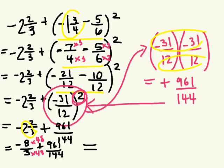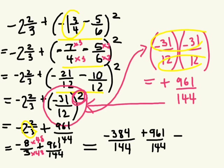And we want to find a common denominator and then simplify. If we multiply this by 48, the common denominator will be 144. So we have, what's negative 8 times 48? Negative 384 over 144 plus 961 over 144. And what's the answer? 577 over 144. And can we turn this into a mixed number? Equals 4 and 1 over 144. And that's the answer.